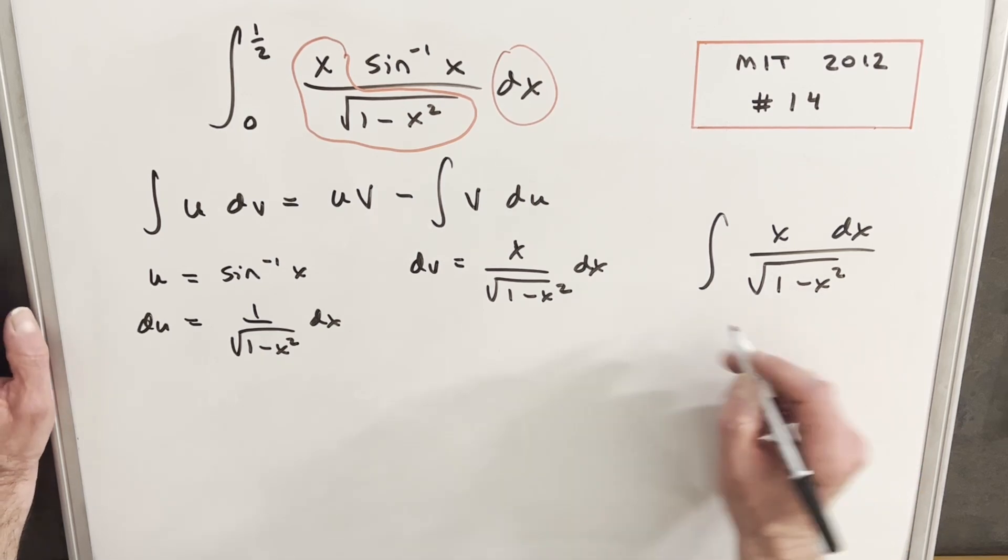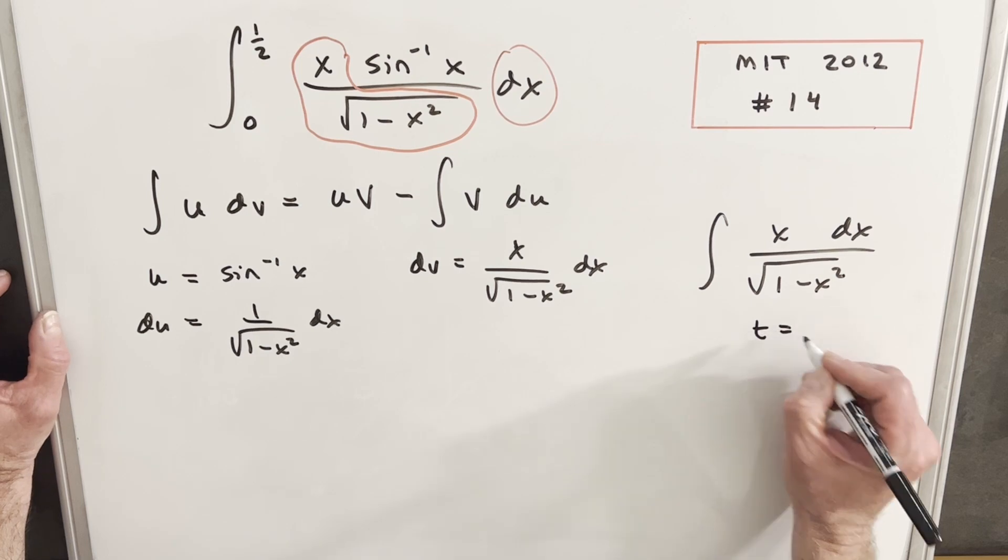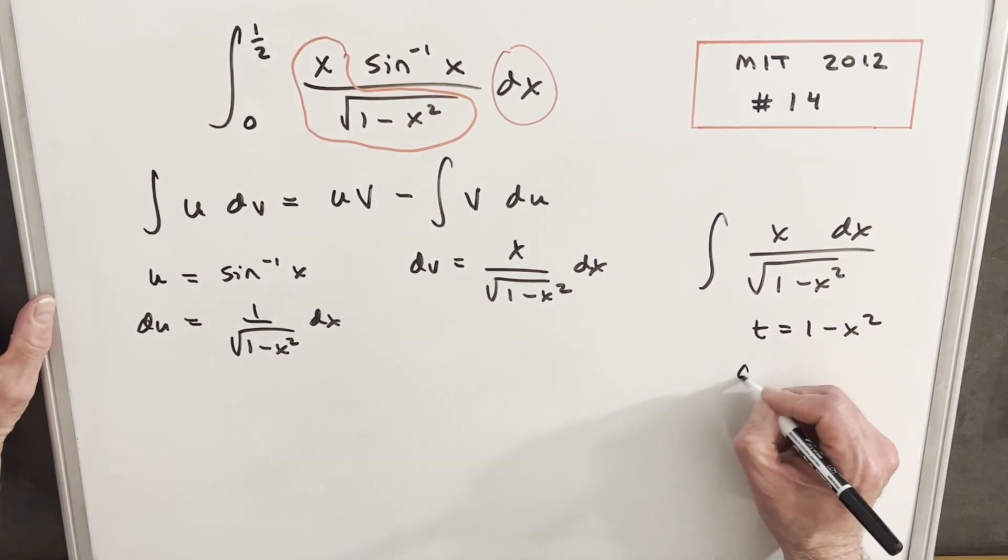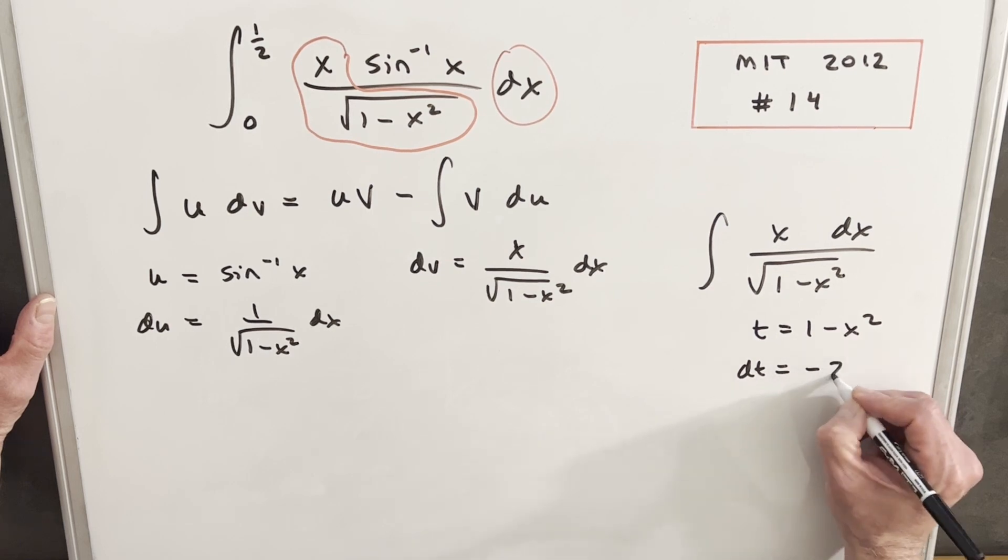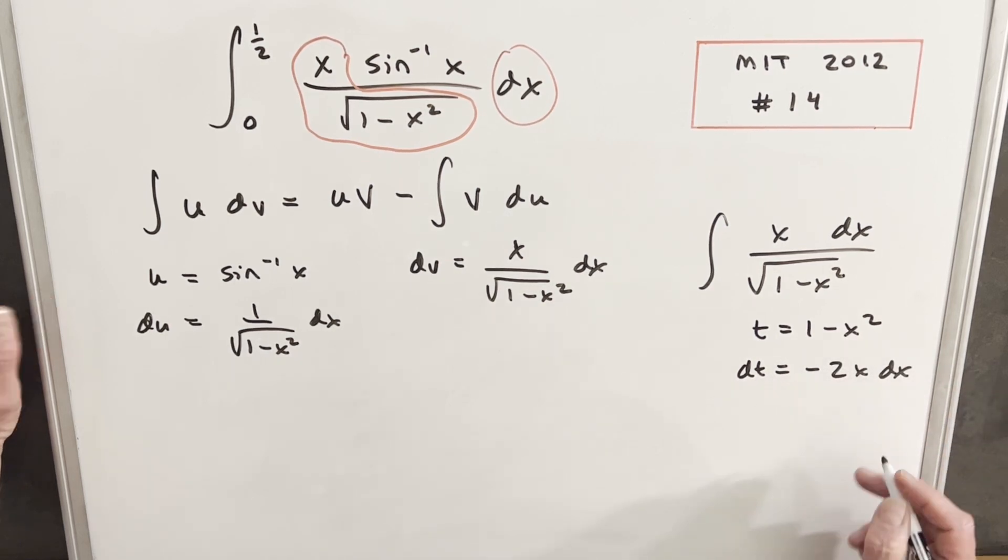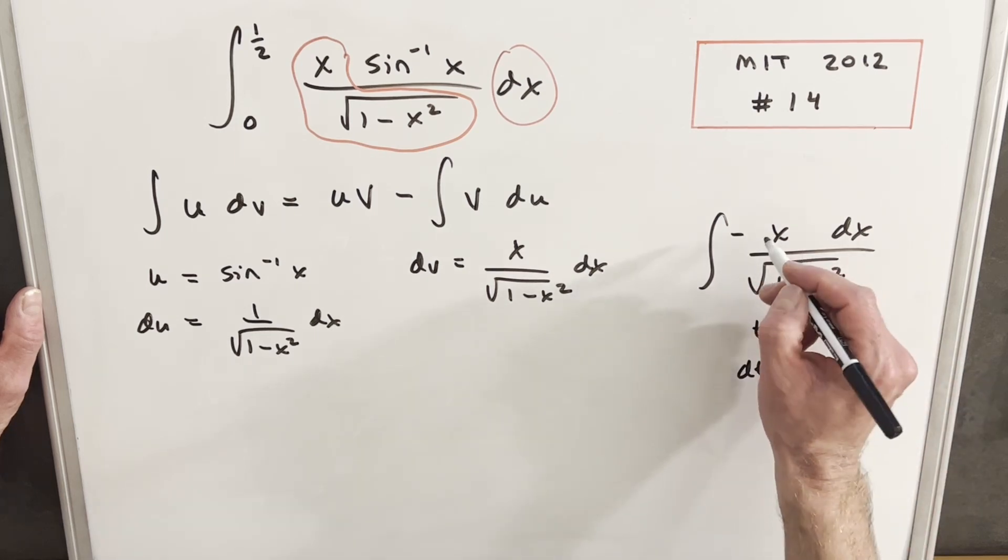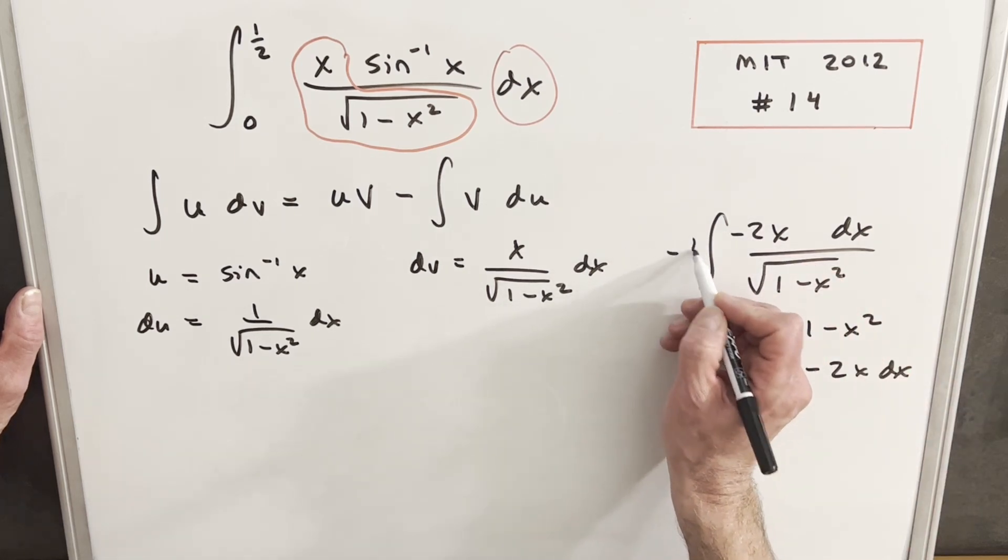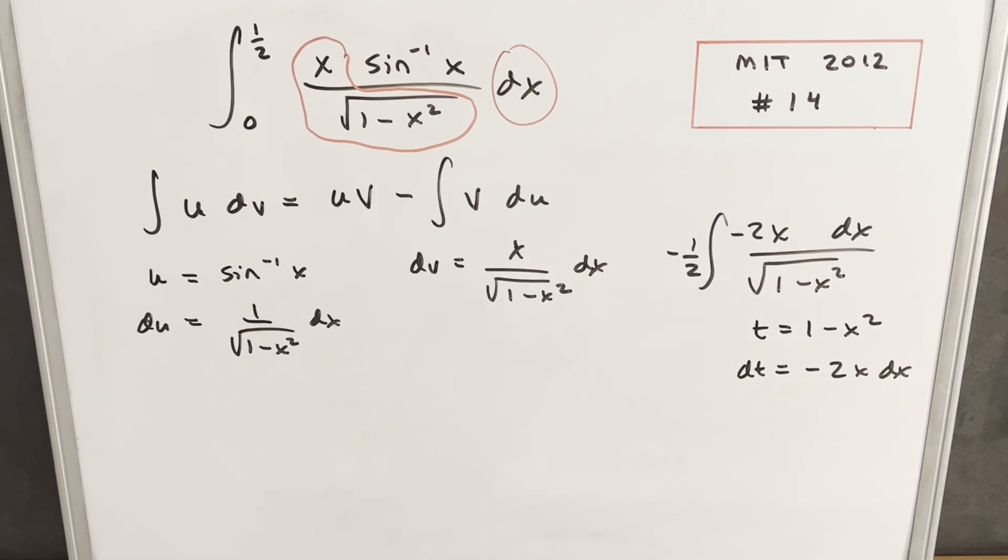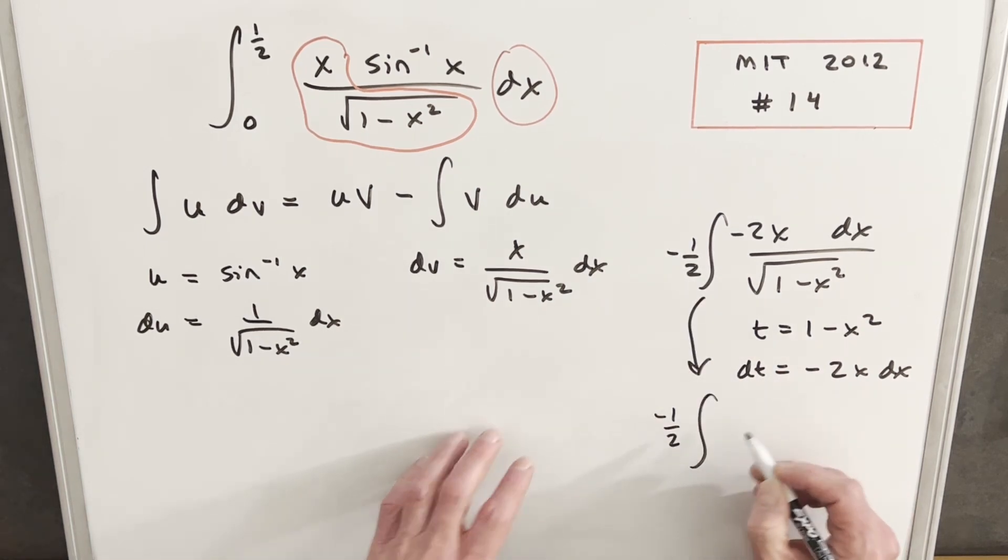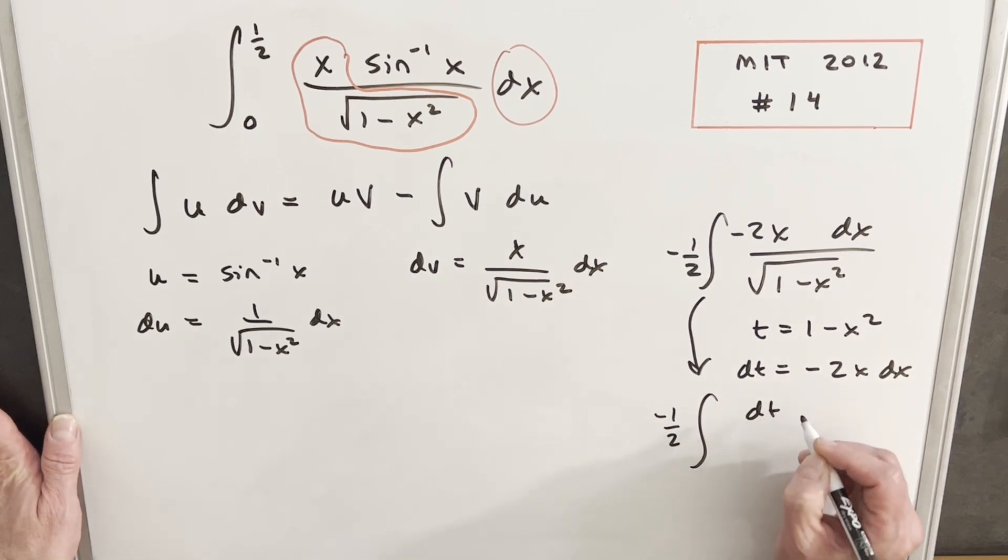I'll use t, and we'll call t = 1 minus x squared. Taking the derivative, our dt is going to be minus 2x dx, pretty close to what we have in the numerator. I'm just going to create this minus 2 here, and we can multiply by minus 1/2 so we're not changing the expression. Then just a simple integral, in the numerator it's going to be dt, and we're going to have square root of t here.